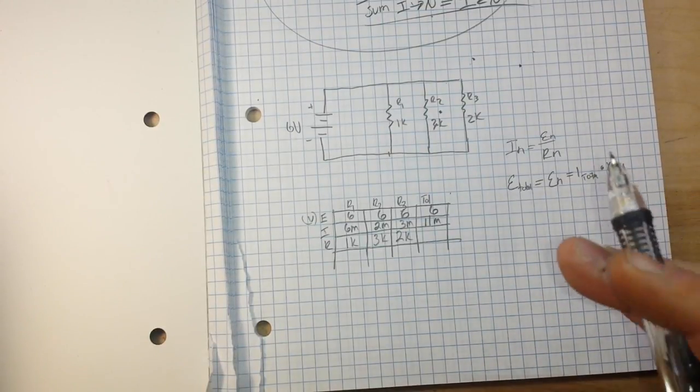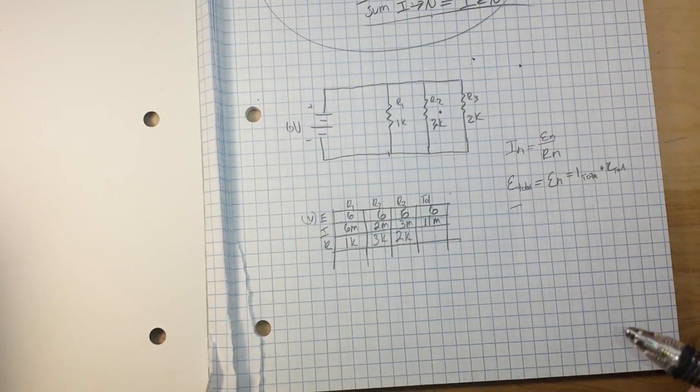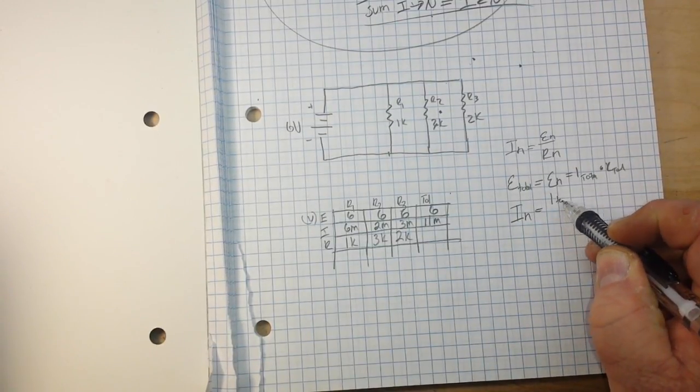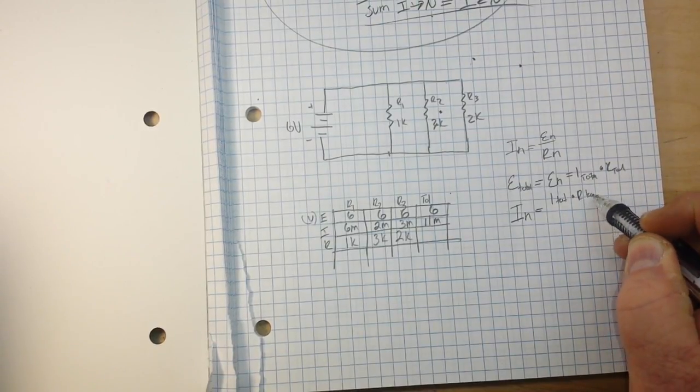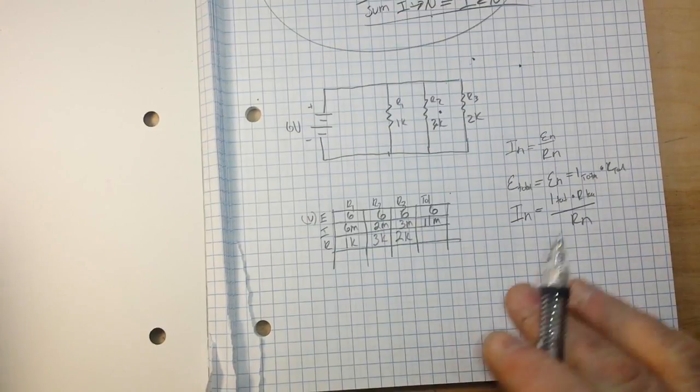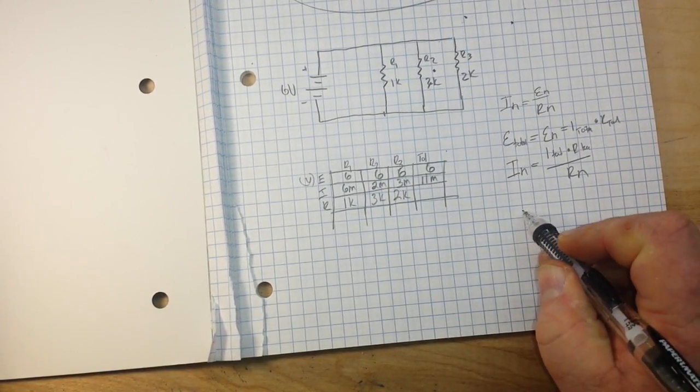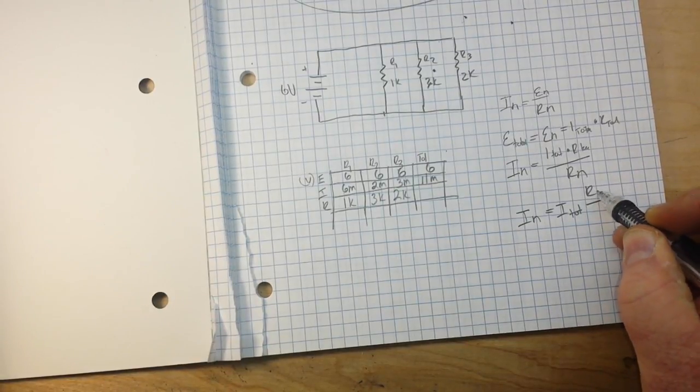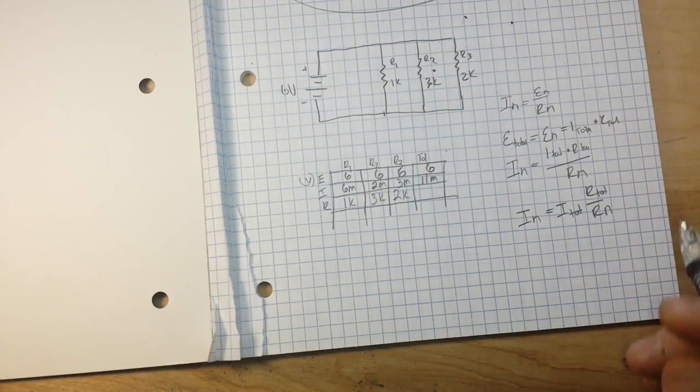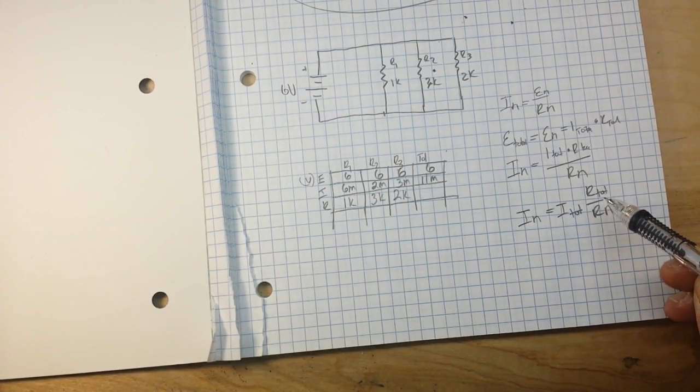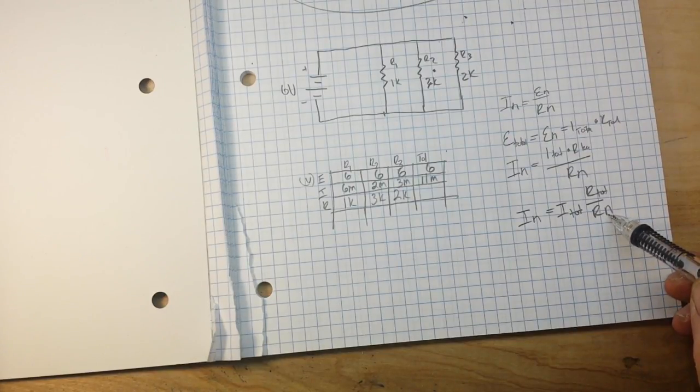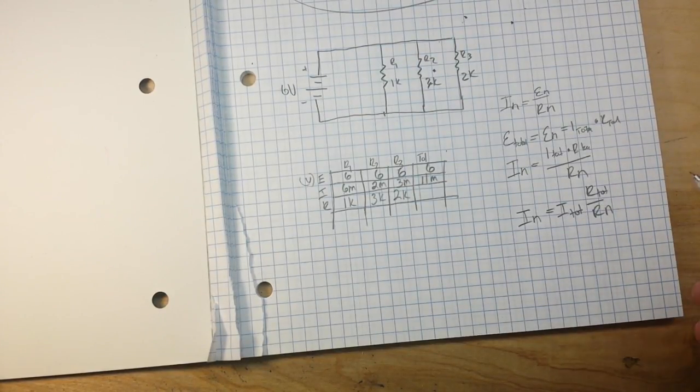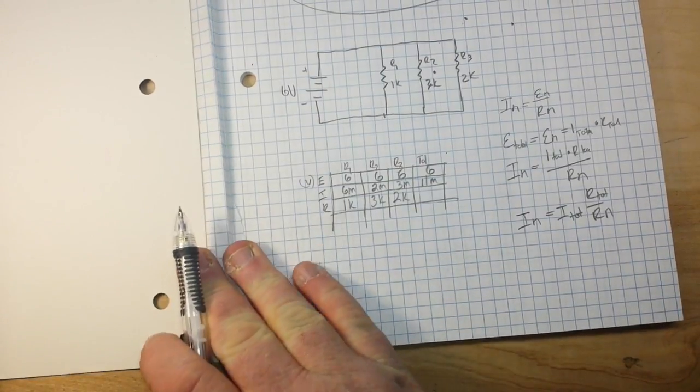So the current through any parallel resistor—oh, I think I broke my pencil. Happens with the chalk all the time. In is equal to I total times R total over Rn. And if we break that down completely, we find that In equals I total times R total over Rn. The ratio of the total resistance to the individual resistance is the same ratio as individual current to branch current. This is the current divider formula, and it's a shortcut for determining branch currents in a parallel circuit.